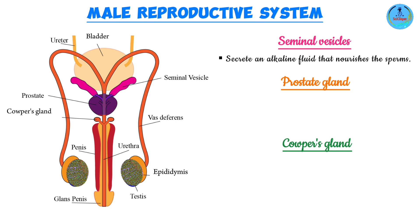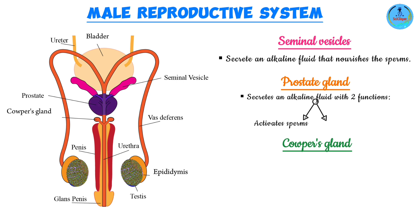The prostate gland is located at the junction between the vas deferens and the urethra, and it secretes an alkaline fluid that has two functions. Number one, it activates the sperm, ensuring that the sperm are mobile. Number two, it neutralizes the vaginal fluids, since the fluids present in the vagina tend to have a low pH — slightly acidic — which inhibits pathogens but has a negative effect on sperm cells. The alkaline fluid neutralizes this acidity.